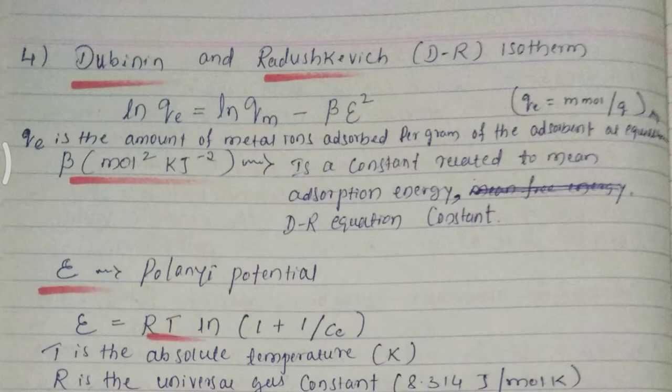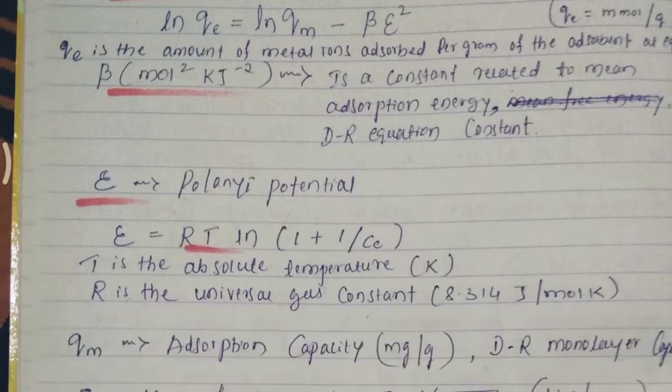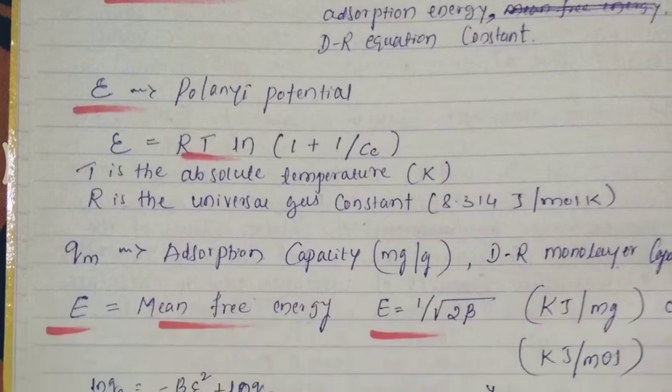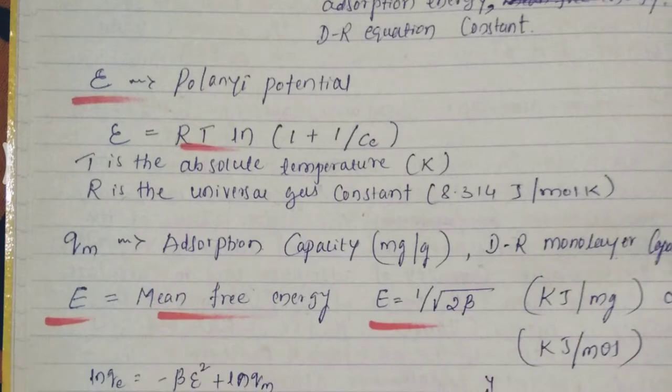Also you can say DR equation constant. This is a polynomial potential epsilon, so epsilon formula is RT ln in bracket 1 plus 1 by c. Here capital T is the absolute temperature in Kelvin and R is the universal gas constant where you can take a value 8.314 joule per mole Kelvin.